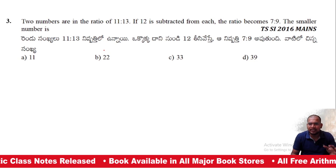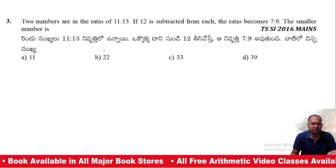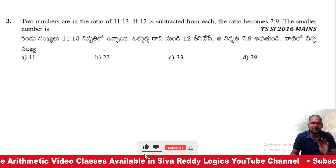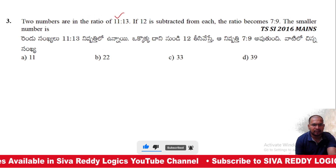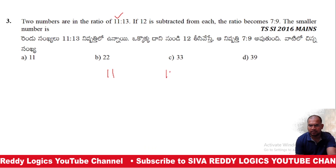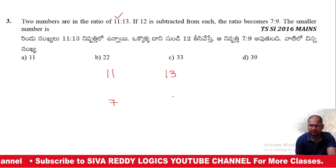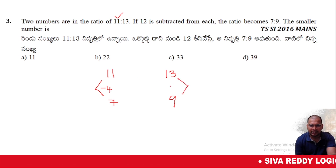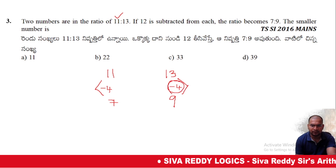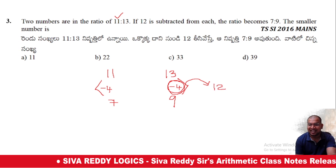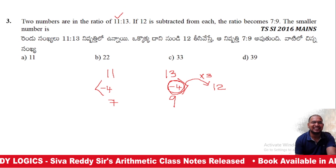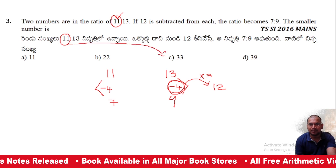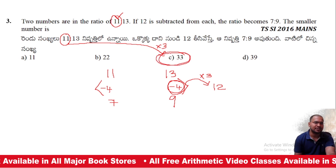Third question: Two numbers are in the ratio 11:13. If 12 is subtracted from each, the ratio becomes 7:9. What is the smaller number? With 11 parts and 13 parts, after subtraction we get 7 and 9 parts — a difference of 4 parts each side. One part equals 3, so 11 times 3 equals 33. Option C will be the right answer.